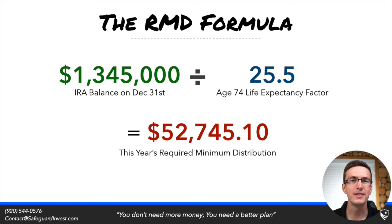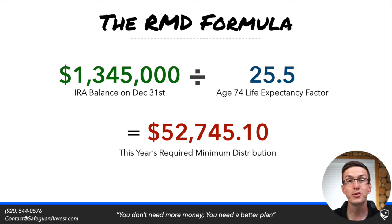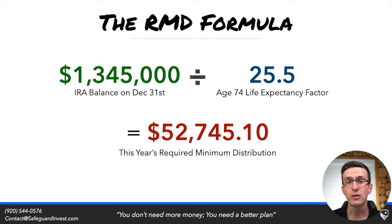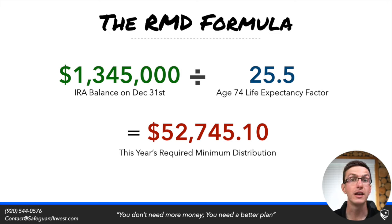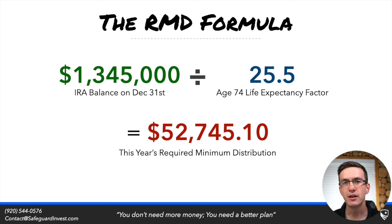So let's say that last year on December 31st your IRA balance was $1,345,000, and let's say you were turning 74 that following year. You'd go to the uniform table and find that your life expectancy factor is 25.5. You would divide that IRA balance by that life expectancy factor and find that your RMD in this specific situation is about $52,745.